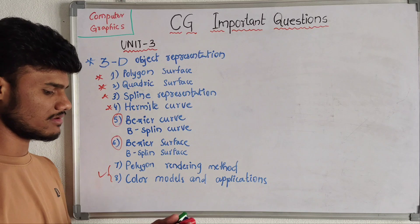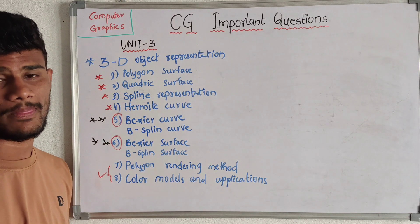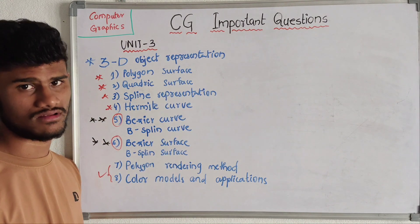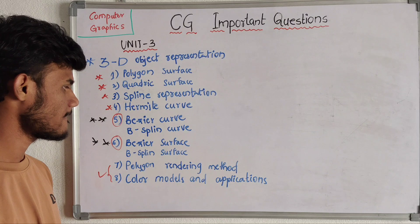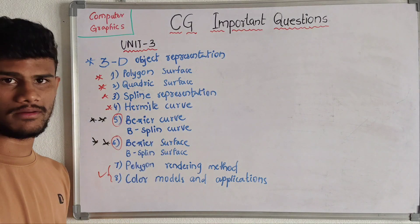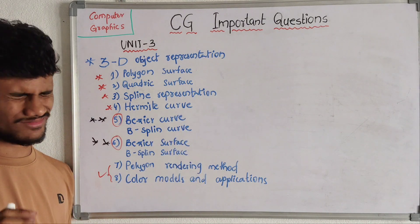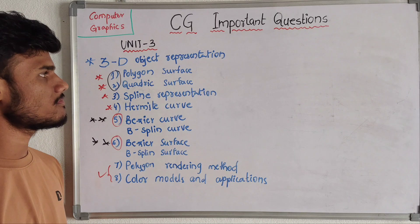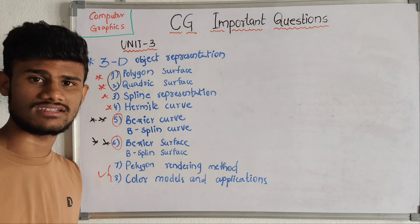These two topics are mainly important: curve expansion and surface expansion. Polygon structure and quadric structure are the main important questions in this topic. The third unit is actually the easiest topic overall among all units.